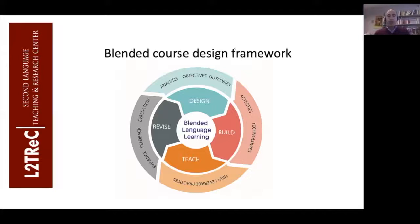When we think about developing a course, we start with an analysis of the characteristics and needs of the students, how the course fits within a program, what the objectives of the course are and how they fit within program objectives, and the specific outcomes of the course. That's the first phase. Then we move to the build phase, where based on the objectives, outcomes, and student needs, we build the activities that will allow students to reach those outcomes. We create the curriculum, and in a blended course, we think about the technologies that allow us to develop effective activities.